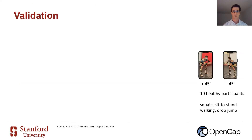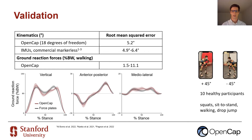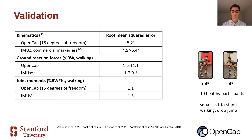We validated OpenCap with two cameras against marker-based motion capture and force plate analysis in a cohort of 10 individuals performing four different activities. OpenCap had a 5.2-degree error compared to motion capture, which is similar to IMUs and commercial markerless systems. OpenCap ground reaction forces during walking, shown in red, were similar to force plates shown in gray. The errors in these forces and in joint moments were similar to IMU-based approaches.